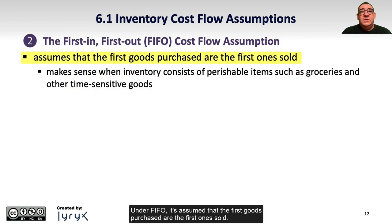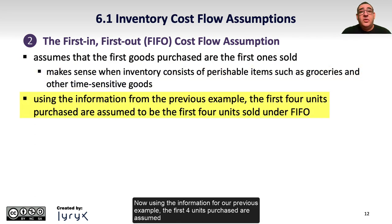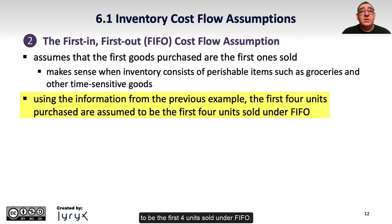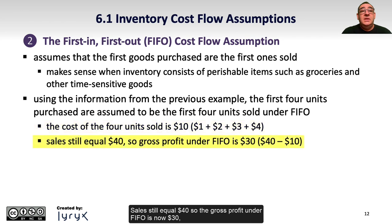Under FIFO, it's assumed that the first goods purchased are the first ones sold. This method makes most sense when inventory consists of perishable items such as groceries or other time-sensitive goods. Using the information from our previous example, the first 4 units purchased are assumed to be the first 4 units sold under FIFO. So the cost of the 4 units sold would be $10, calculated as 1 plus 2 plus 3 plus 4 dollars. Sales still equal $40, so gross profit under FIFO is now $30.